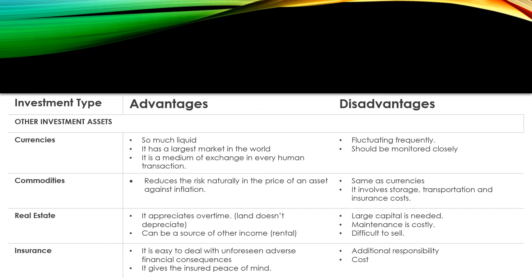For other investment assets, we have currencies, commodities, real estate, and insurance. For currencies, the advantages are: highly liquid, it has the largest market in the world, and it is a medium of exchange in every human transaction. The disadvantages are: it fluctuates frequently, and we should monitor it closely. For commodities, the advantage is that it reduces risk by acting as a hedge against inflation in asset prices. The disadvantage is similar to currencies, and it also involves storage, transportation, and insurance costs.